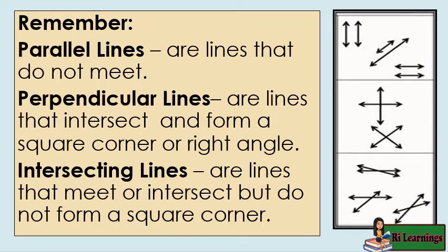Remember: parallel lines are lines that do not meet. Perpendicular lines are lines that intersect and form a square corner or right angle. Intersecting lines are lines that meet or intersect but do not form a square corner.